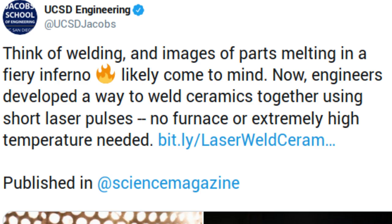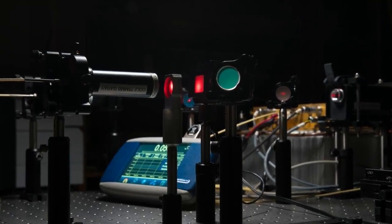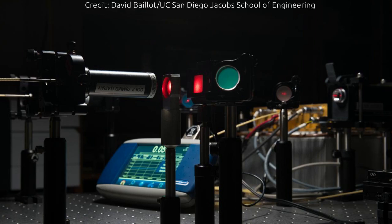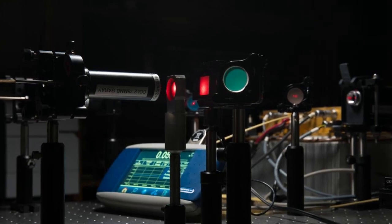Their new process uses an ultra-fast pulsed laser to melt ceramic materials along the interface and fuse them together. It works in ambient conditions and uses less than 50 watts of laser power, making it more practical than current ceramic welding methods that require heating the parts in a furnace.